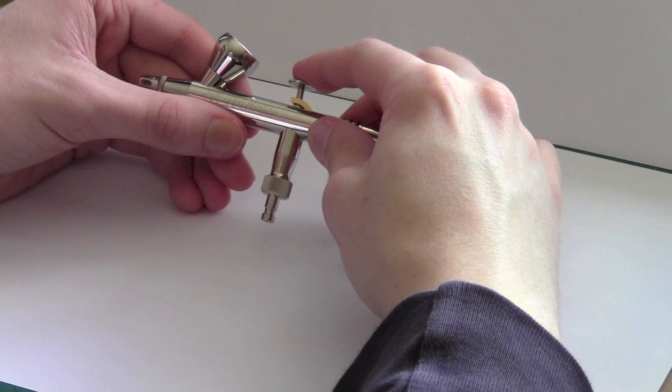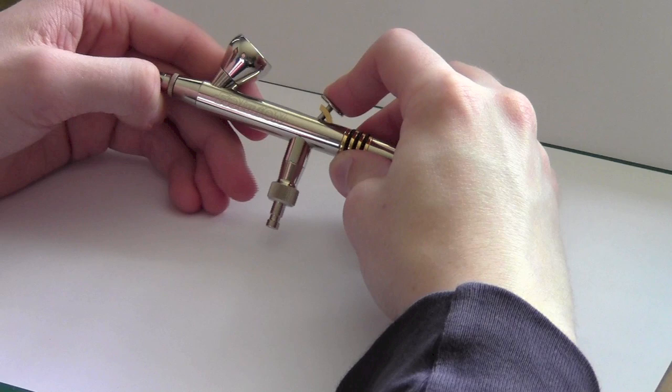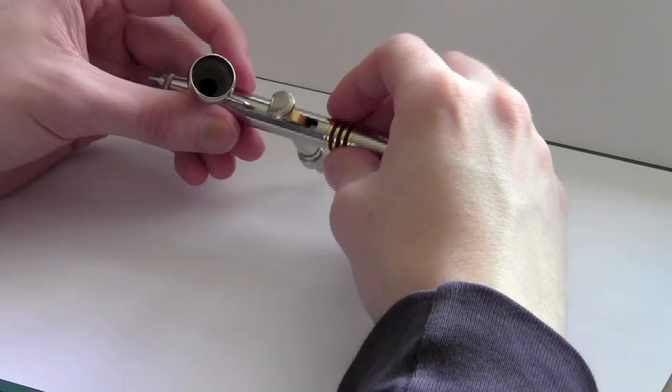So the air will come up through here. We're going to release the air by pushing this down. And then as we pull this back, the needle itself moves back and you can release how much paint, control how much paint is released from the nozzle by moving the needle backwards like that. So that is basically how the airbrush works and the paint is fed down through here.